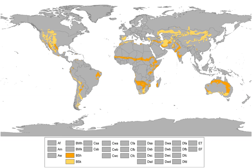Hot semiarid climates, type BSH, tend to be located in the 20s and 30s latitudes of the tropics and subtropics, typically in proximity to regions with a tropical savanna or a humid subtropical climate. These climates tend to have hot, sometimes extremely hot, summers and warm to cool winters, with some to minimal precipitation. Hot semiarid climates are most commonly found around the fringes of subtropical deserts, and most commonly in Africa, Australia, and South Asia.